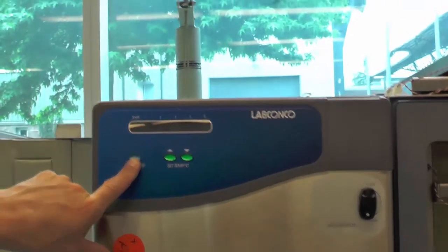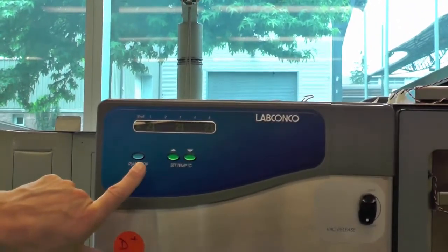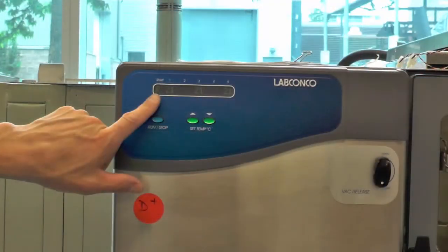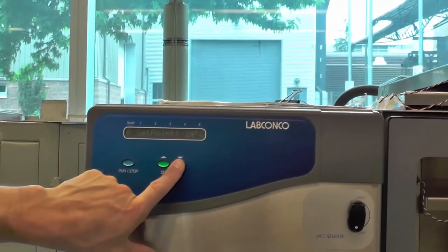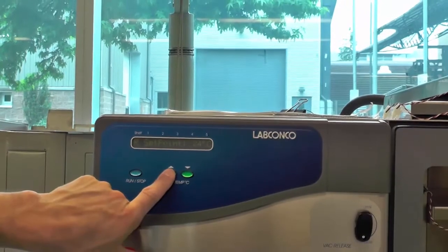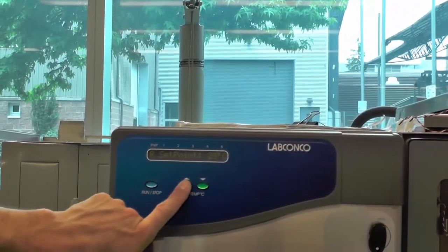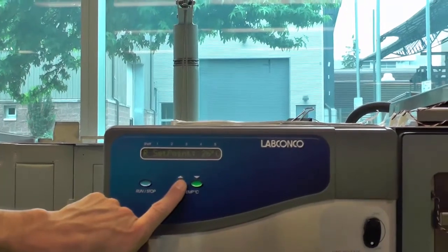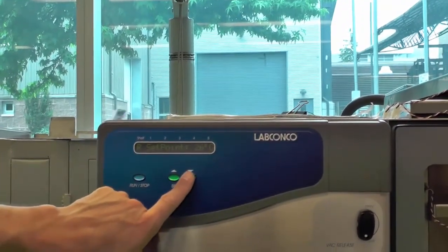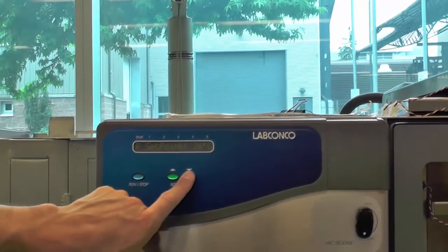To apply heat, first press the blue run slash stop button. The letter R should appear in the indicator display followed by set point and the temperature. The temperature can then be increased or decreased with the two green buttons. Usually lower temperatures such as around room temperature are preferred as this maintains the integrity of the sample.